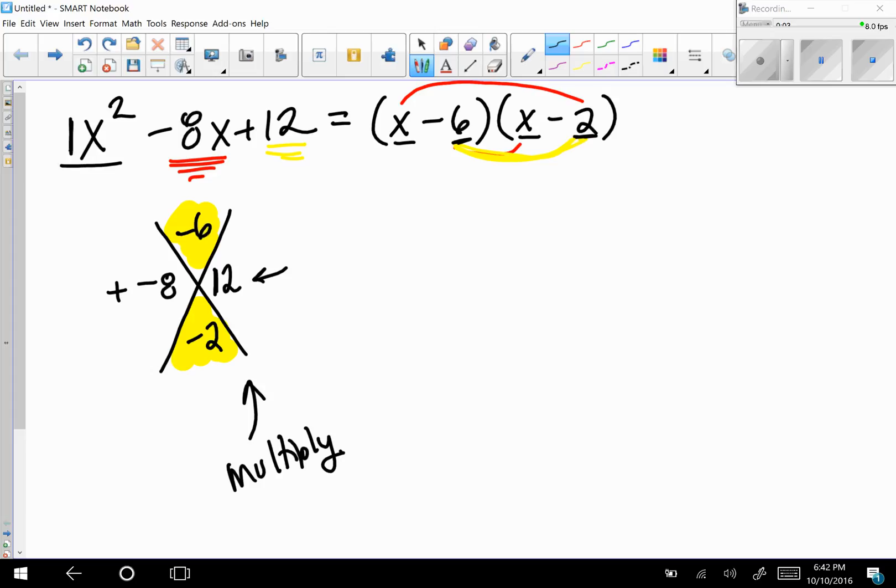You should be able to confirm this by FOILing it out. Let's do that: First is x times x equals x², Outside is negative 2x, Inside is negative 6x, and Last is plus 12, which indeed gives us x² - 8x + 12.